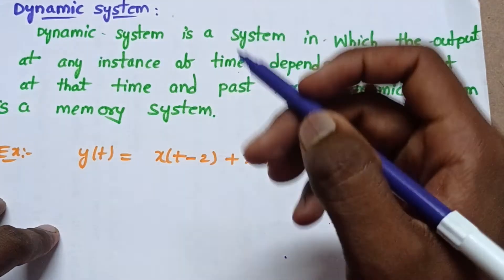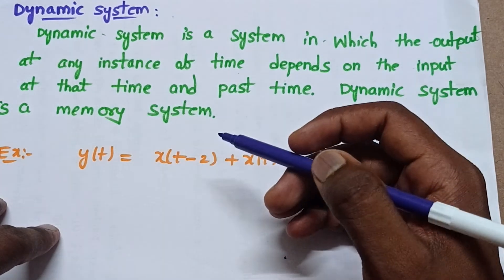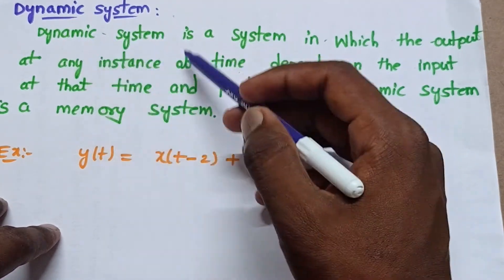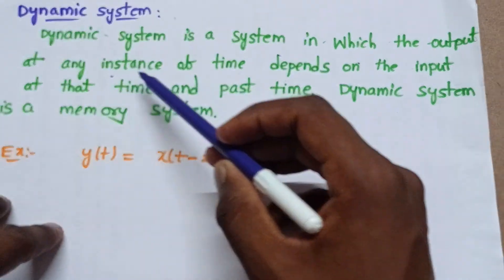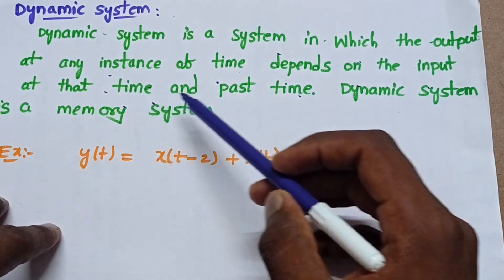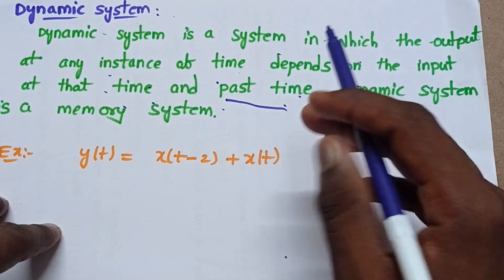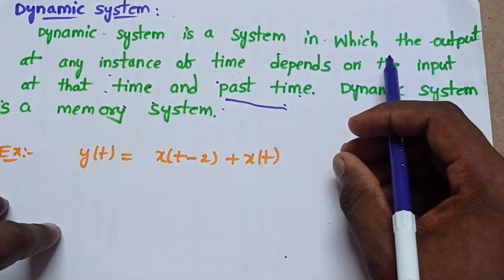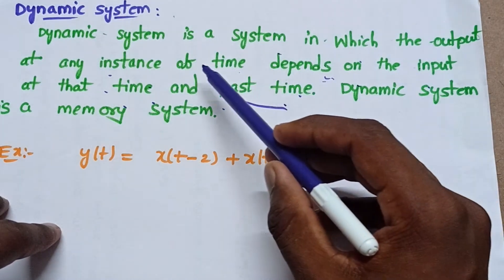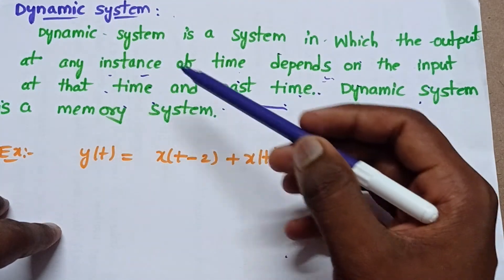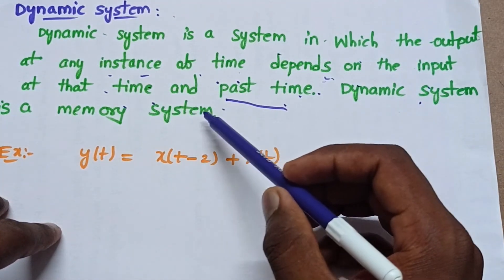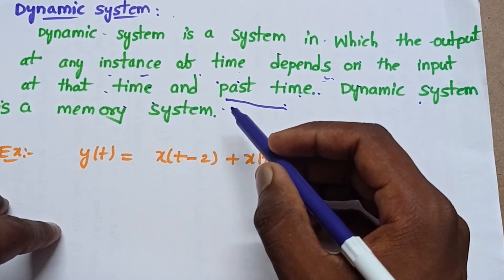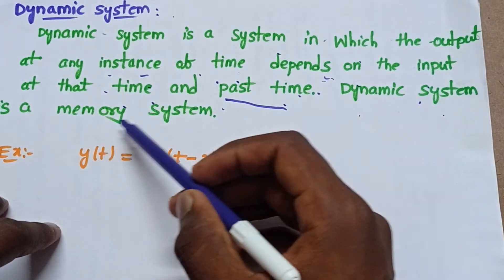Now let's see what is a dynamic system. We already saw that a static system is a memoryless system. But a dynamic system is a memory system. A dynamic system is a system in which the output at any instance of time depends on the input at the present time and past time. That means the output depends on both the present input and past input. Dynamic systems can store the past input values, but static systems cannot store past input values.